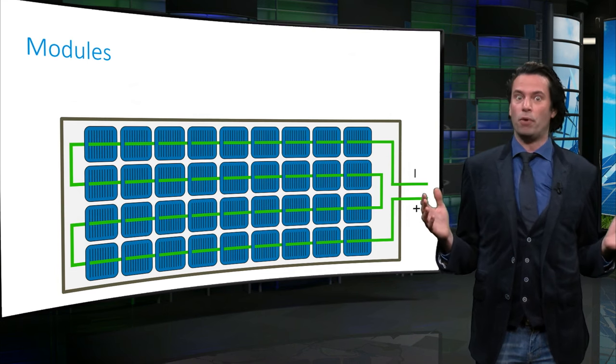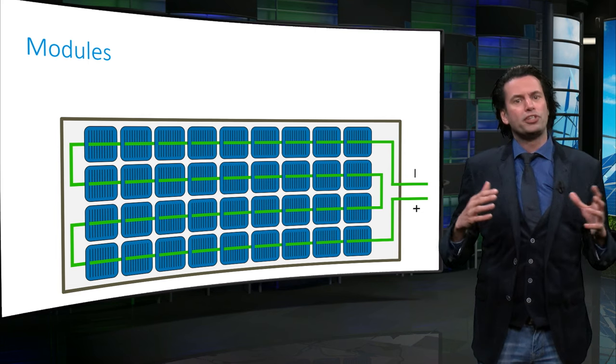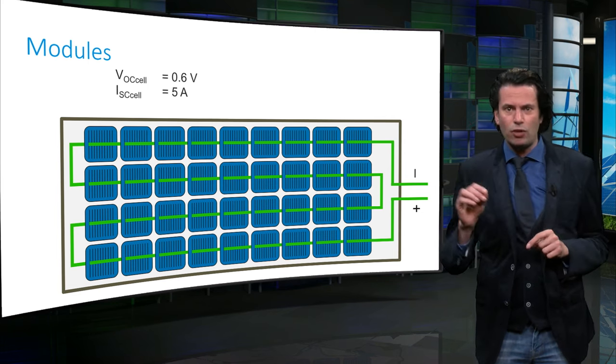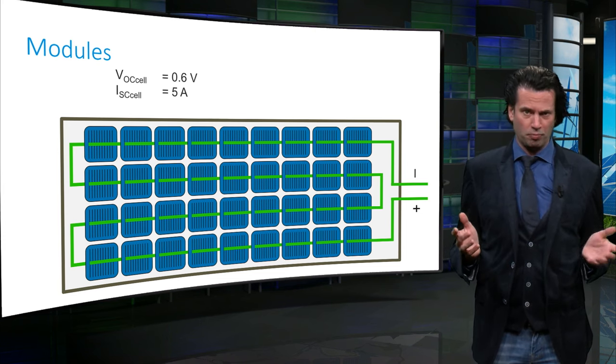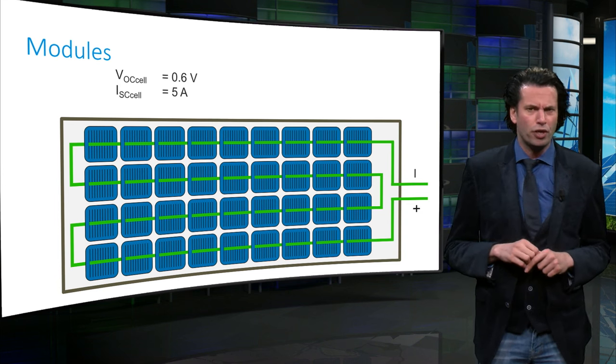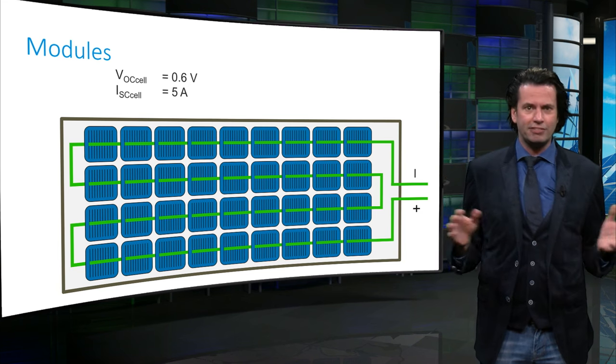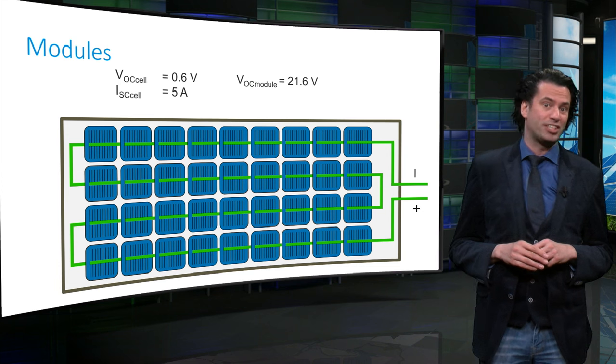But how does that look on module level? Here you can see a module in which all the cells are connected in series. With the data of one cell, we can now easily calculate the voltage of the entire module. This is equal to the voltage of each cell multiplied by the number of cells, 36. This gives us a total open-circuit voltage of 21.6V.